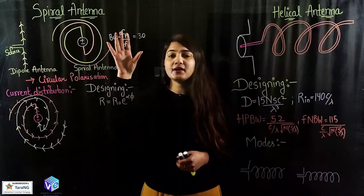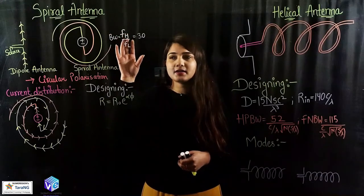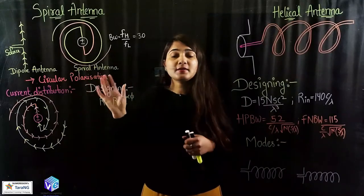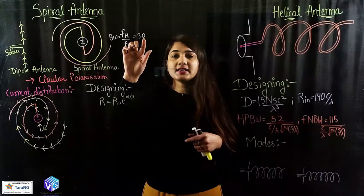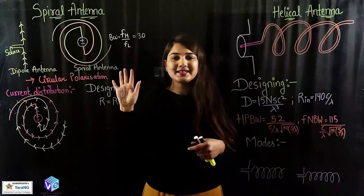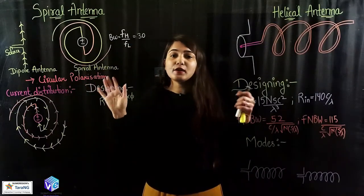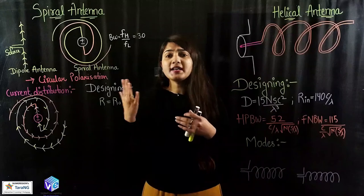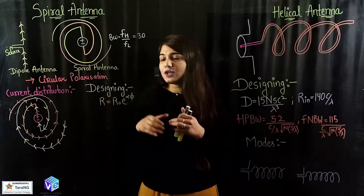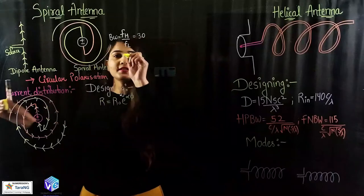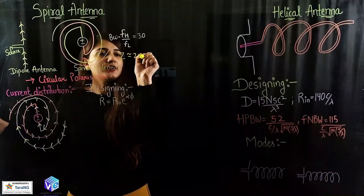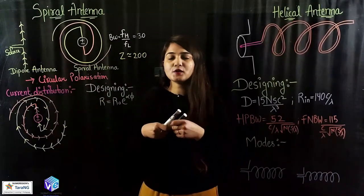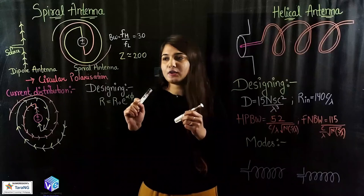What about bandwidth? Because it is having a high bandwidth — a bandwidth ratio equal to 30 — the circular polarization remains as it is up to 30 GHz if starting from 1 GHz. The type of polarization will not change, the impedance will not change, and the radiation pattern also will not change. Coming to the intrinsic impedance, it is nearly equal to 200 ohm, so it can be easily matched with the transmission line and reflection losses will be minimized.